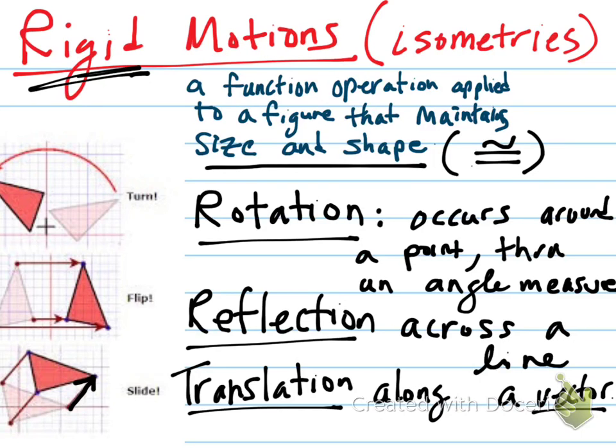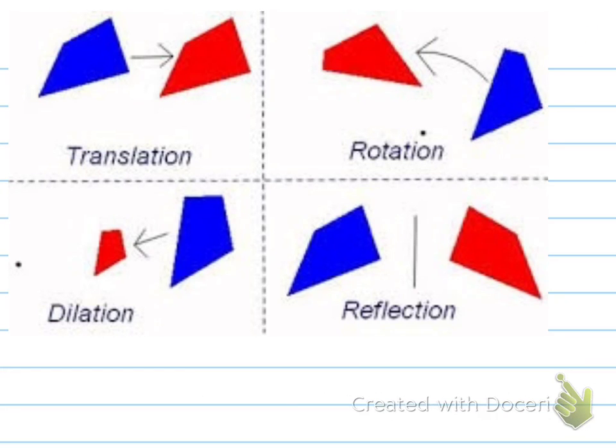So you'll notice all three of these examples are on the Cartesian plane because you have this grid in the background. But I want you to be aware that these transformations can also occur in the Euclidean plane. So here we don't have a grid. So here you see another example of a translation, a slide, and here's the vector across which the translation is occurring. Rotation, once again, with a degree turn around a fixed point, and a reflection across a line.